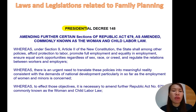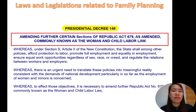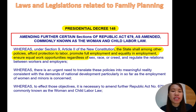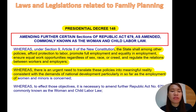We have Presidential Decree 148, which amends further certain sections of Republic Act 679, commonly known as the Woman and Child Labor Law. This is also included among family planning legislation. Among its policies: it affords protection to labor, promotes full employment and equality in employment, ensures equal work opportunities regardless of sex, race, or creed, and regulates the relations between workers and employers. There is an urgent need to translate these policies into meaningful reality consistent with the demands of national development, particularly insofar as the employment of women and minors is concerned.